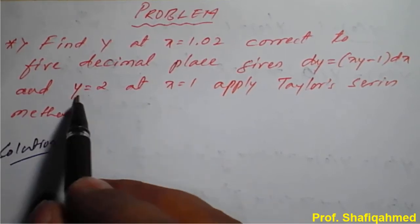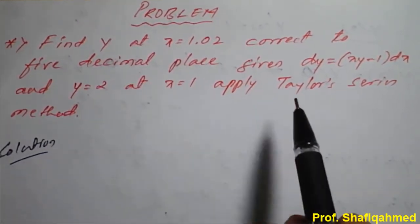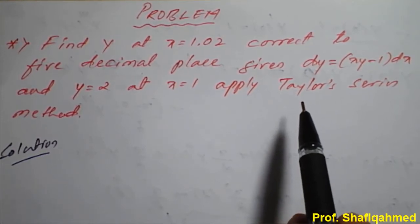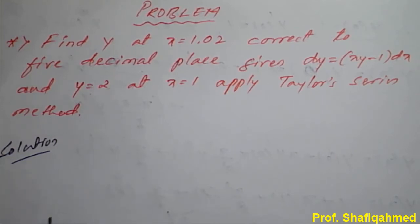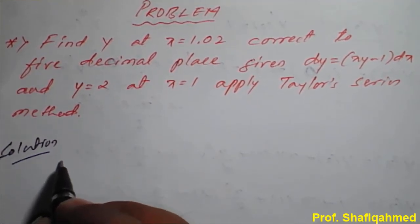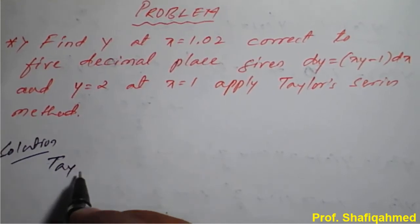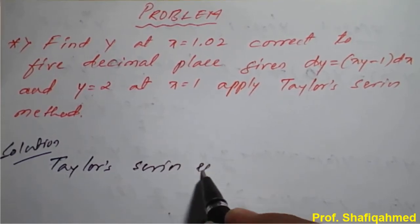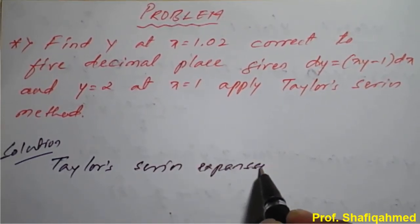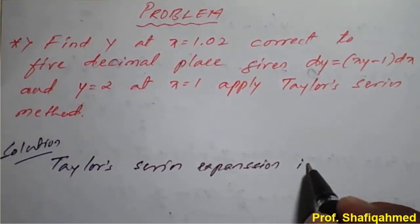They have not mentioned up to what degree we need to simplify. Since the number of derivatives for approximation is not specifically mentioned, we shall approximate up to the third degree or fourth degree. We need to consider and proceed. First, I want to write the Taylor's series expansion.